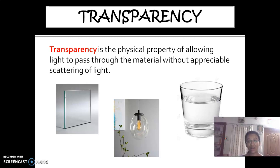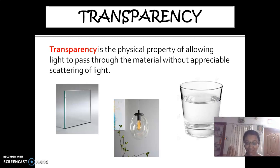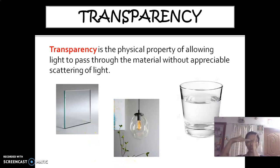In sixth standard, you will have studied about the properties of light in the light, shadow and reflection lesson. The properties of light include transparency, dispersion, scattering, polarization, diffraction, and reflection. When light passes through a transparent material, the material allows all the light through to the other side. This type of material is called transparent.